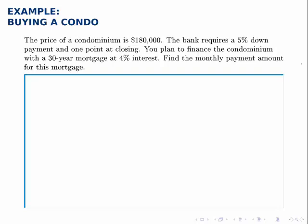Let's say the price of a condo is $180,000 — that's the amount the seller will get. Part of that money will come directly from your pocket, and part will come as a loan from the bank to complete the sale. The bank requires that you put down 5% of the cost of the condo, and they'll pay the other 95%. There's also one point at closing, which we'll deal with in a second.